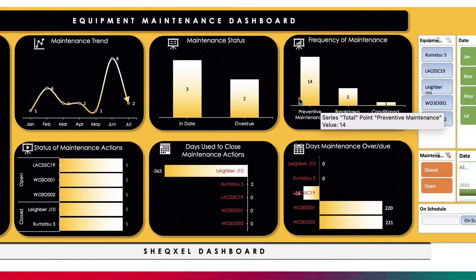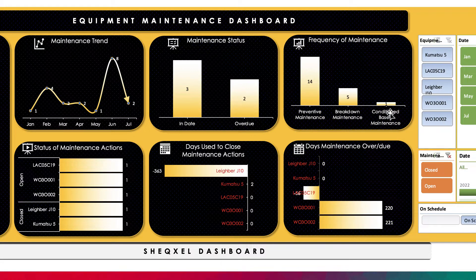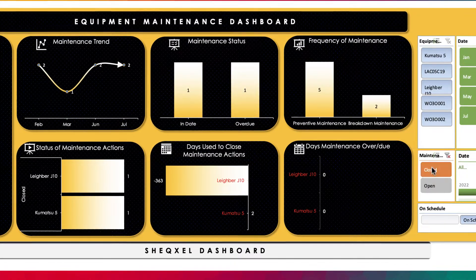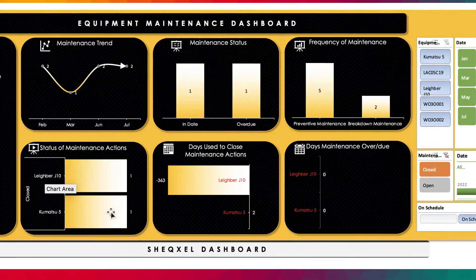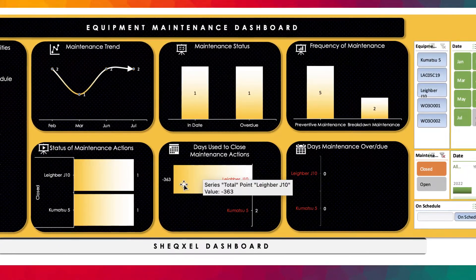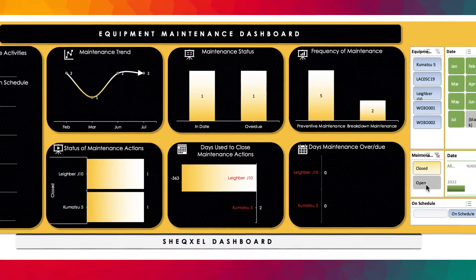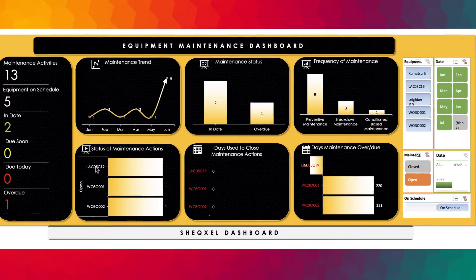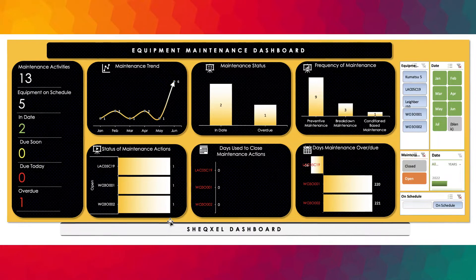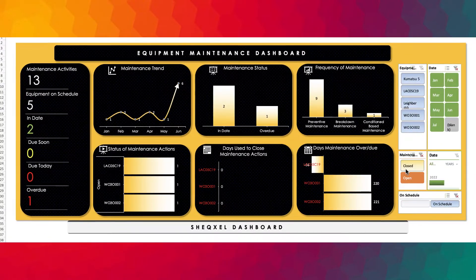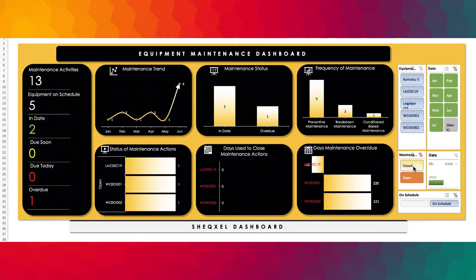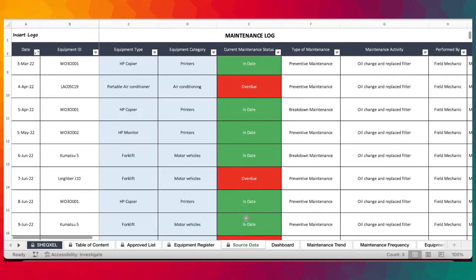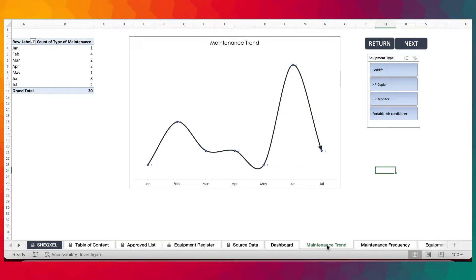There's the frequency of maintenance — how many times we've carried out preventive maintenance, breakdown maintenance, condition-based maintenance. And over here, the maintenance status of the equipment — those that have been closed and those still open. If you click 'close', you can see that two of them have been closed. This tells us the days used to close the activity or the maintenance action. You can see how many maintenance actions are still open. The overall goal is to make sure that you've closed every maintenance activity. This helps you to visualize whatever is happening within the maintenance log.